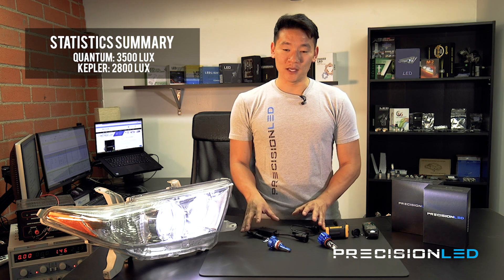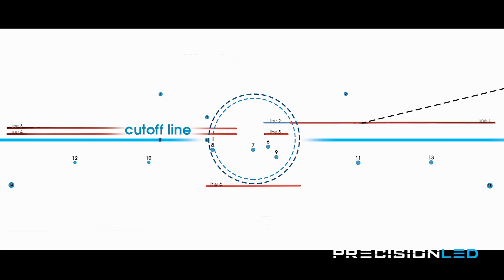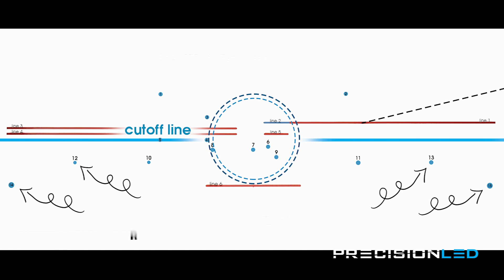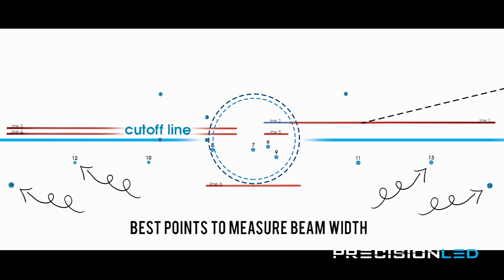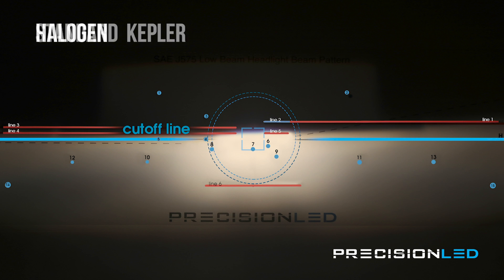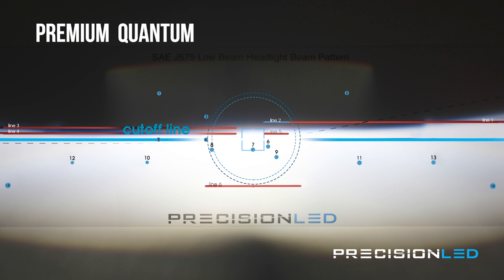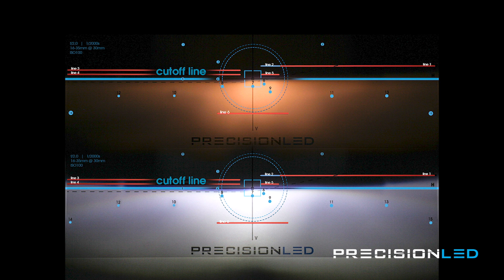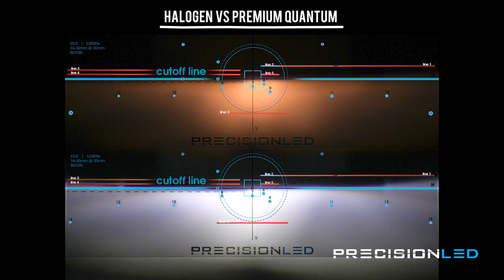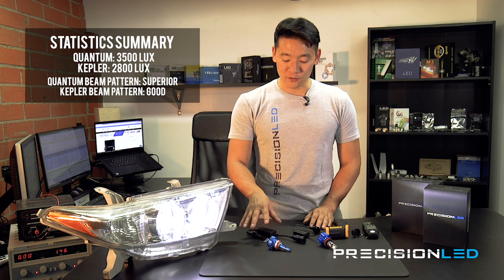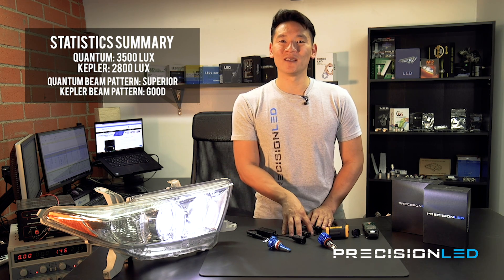The key difference is the uniformity of the beam pattern. Looking at the chart, there are 15 points where we measure brightness. Better uniformity means more light dispersed to the center as well as left and right for a better field of view. The Quantum series has superior beam pattern — you'll see oncoming traffic better on your left and also see the passenger side passing lane on the right. The Kepler series is a great performer, just not as good as the Quantum series.